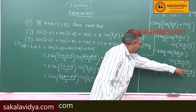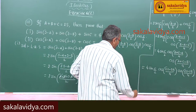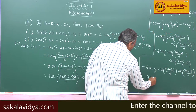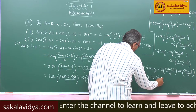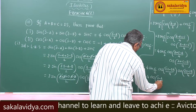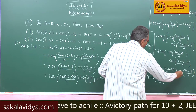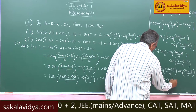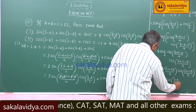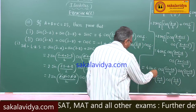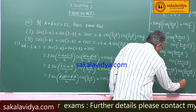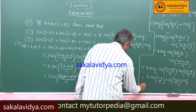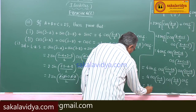So directly we can write 4 cos((s minus c)/2) — this is cos((s minus b)/2) and we have sin(c/2). So this equals the right hand side, which completes the proof.